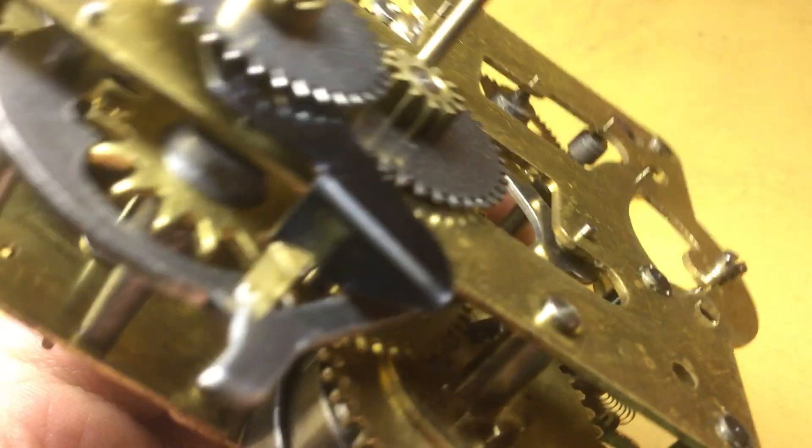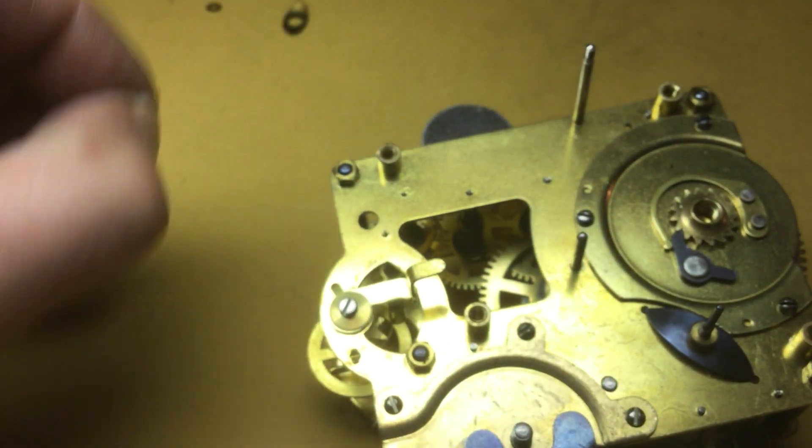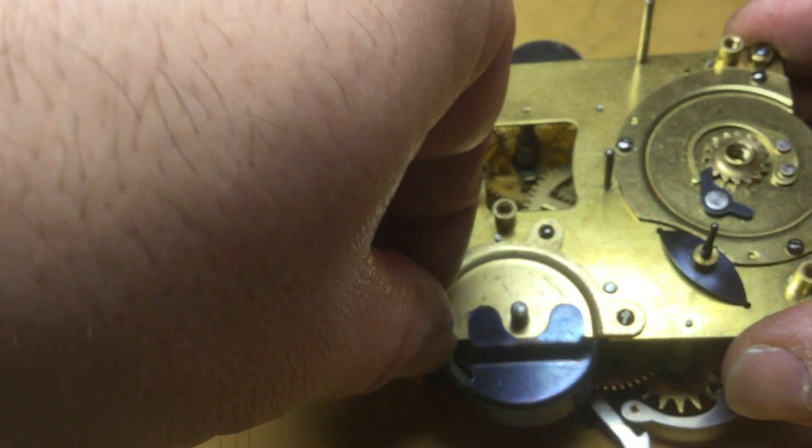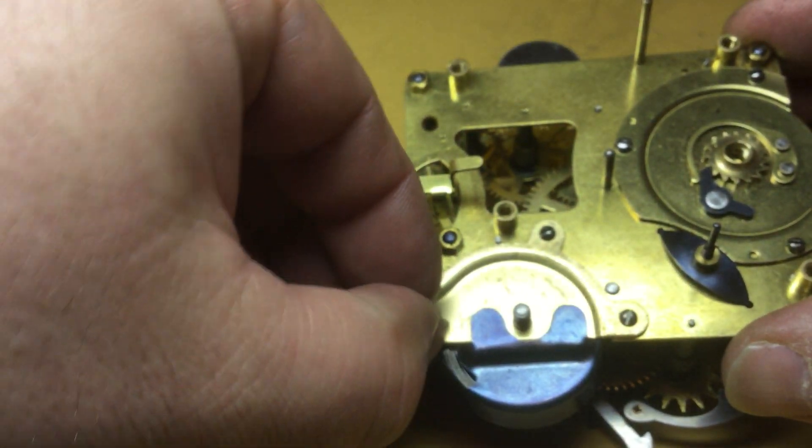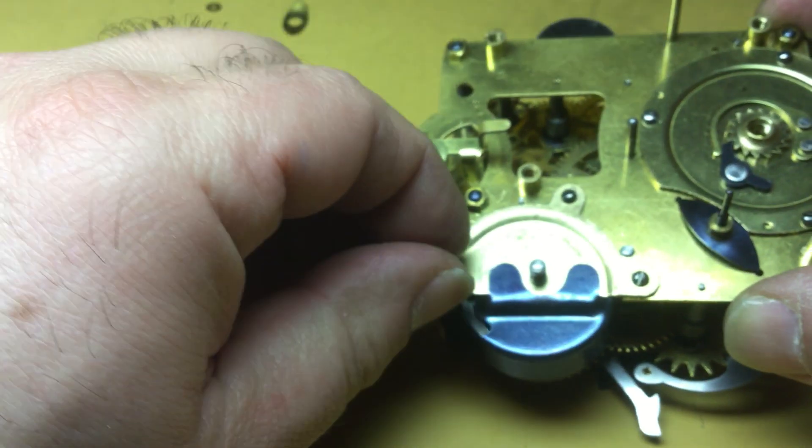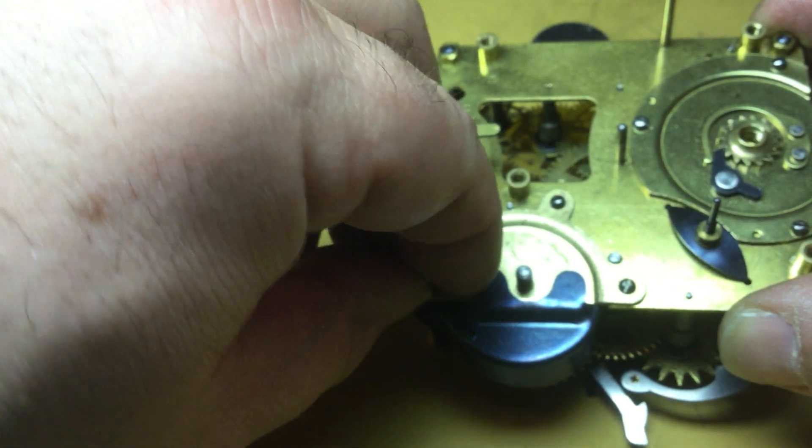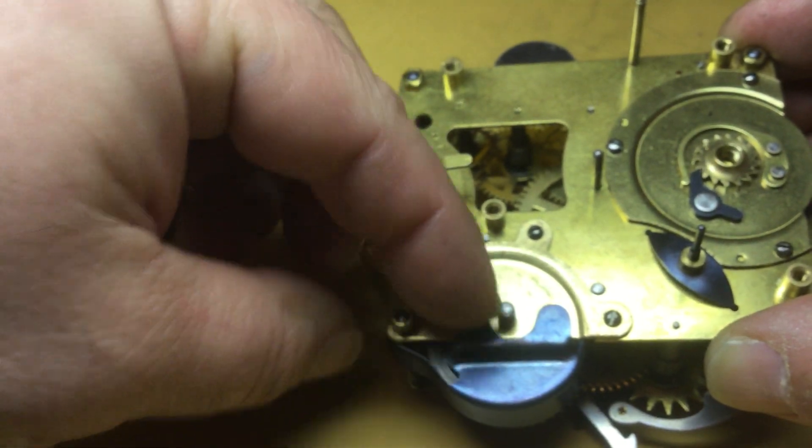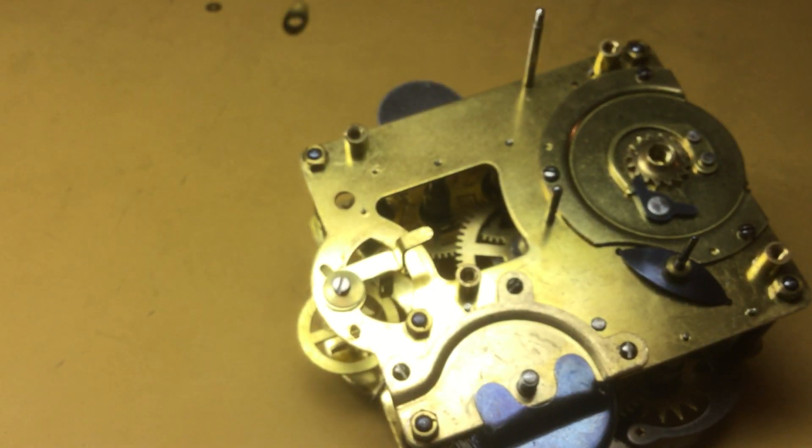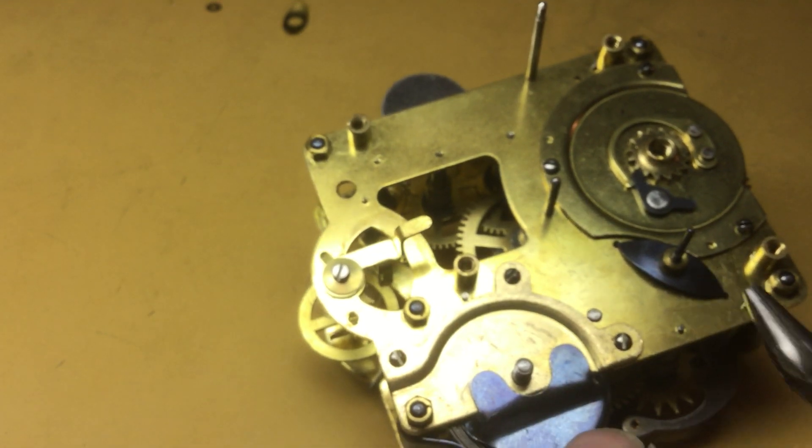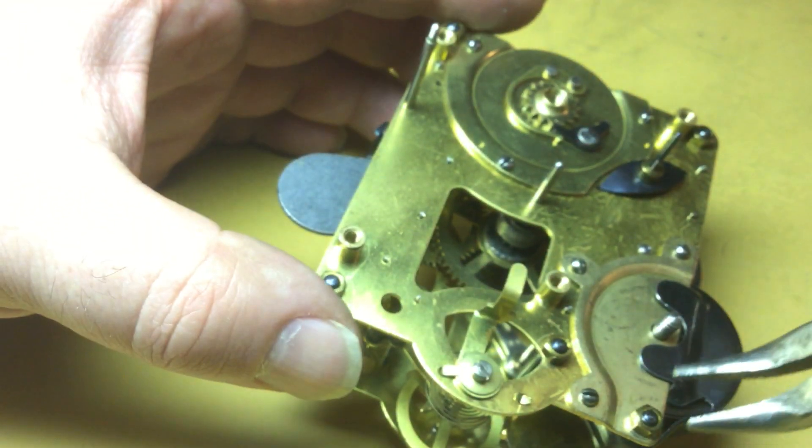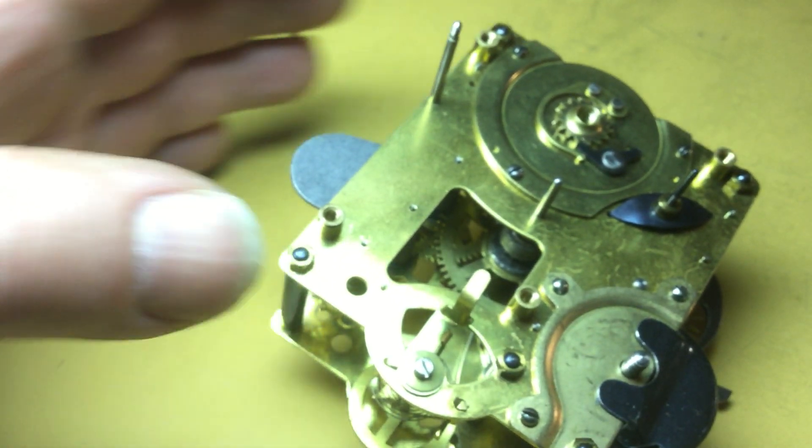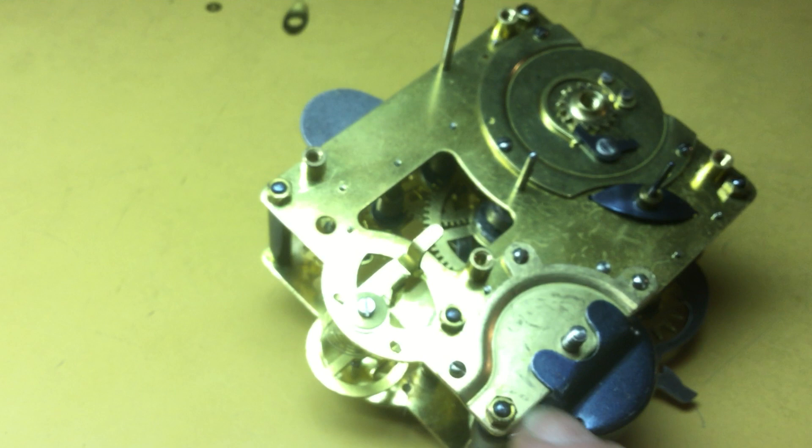Drop there. Drop there. Got the last pillar nut can go on finally now. I don't drop it. The pillar nuts are just like this threaded collar. They've got a hole on one side that's chamfered. The hole on the other is not. Chamfered side always goes towards the movement plate.